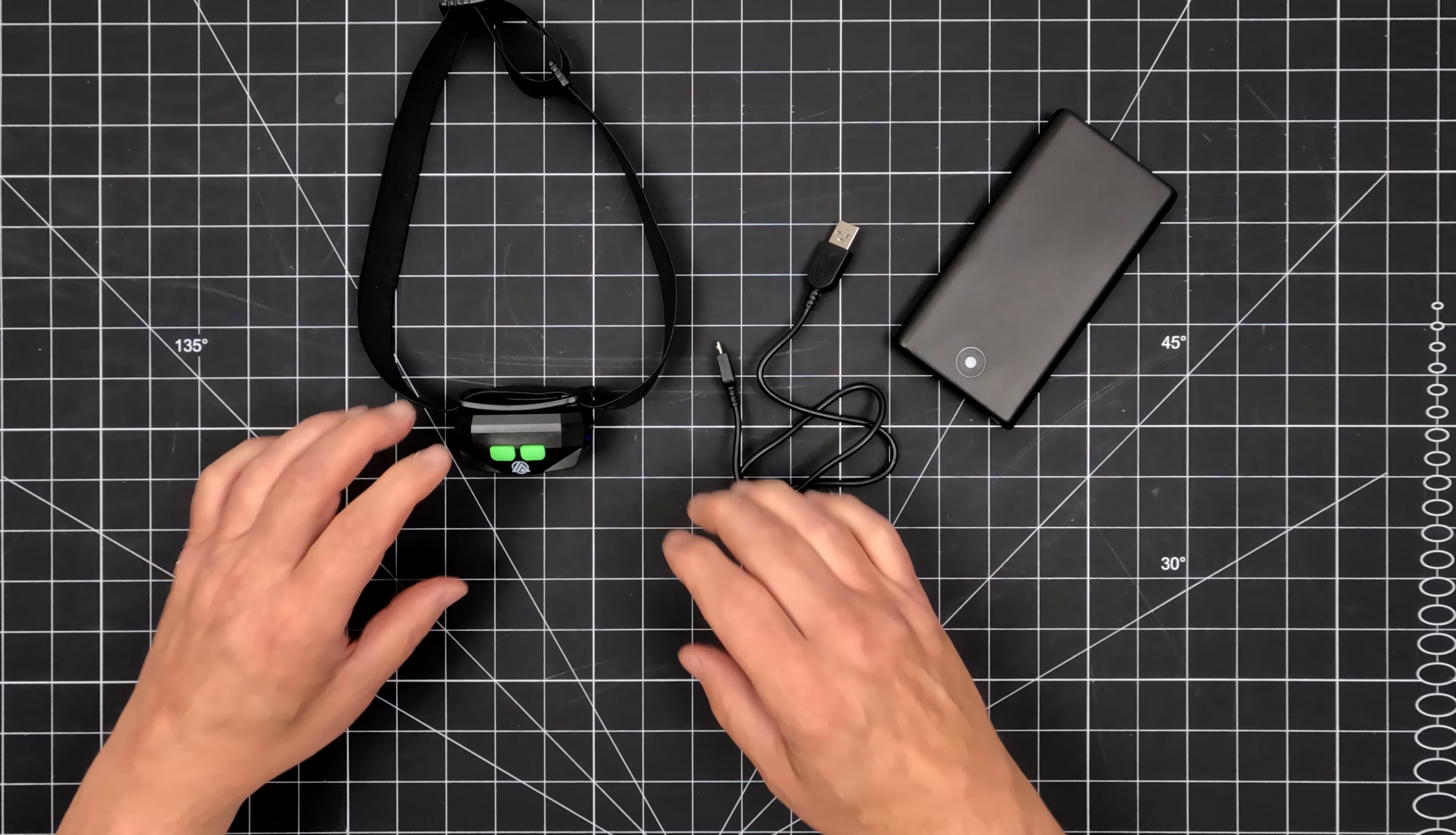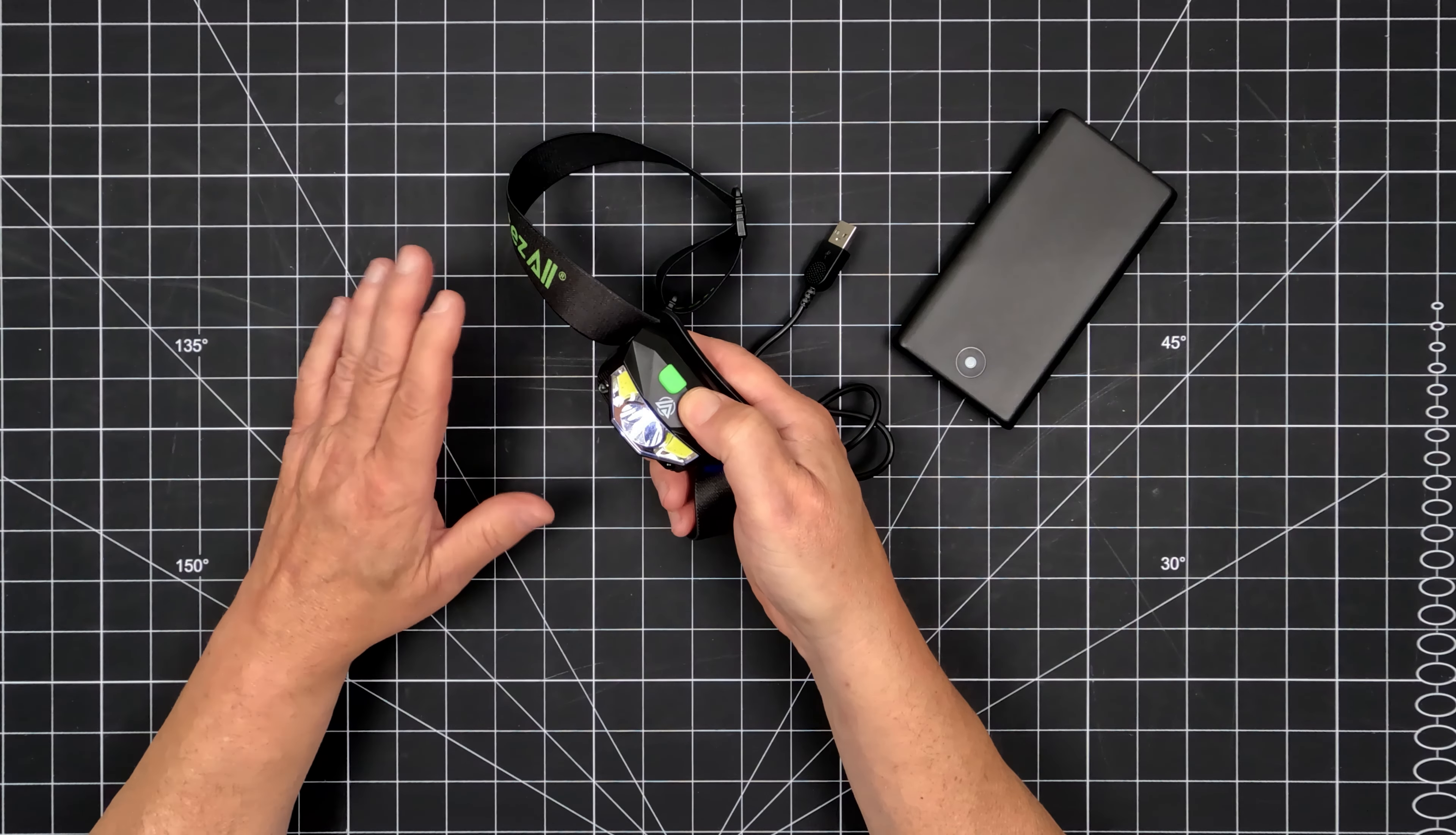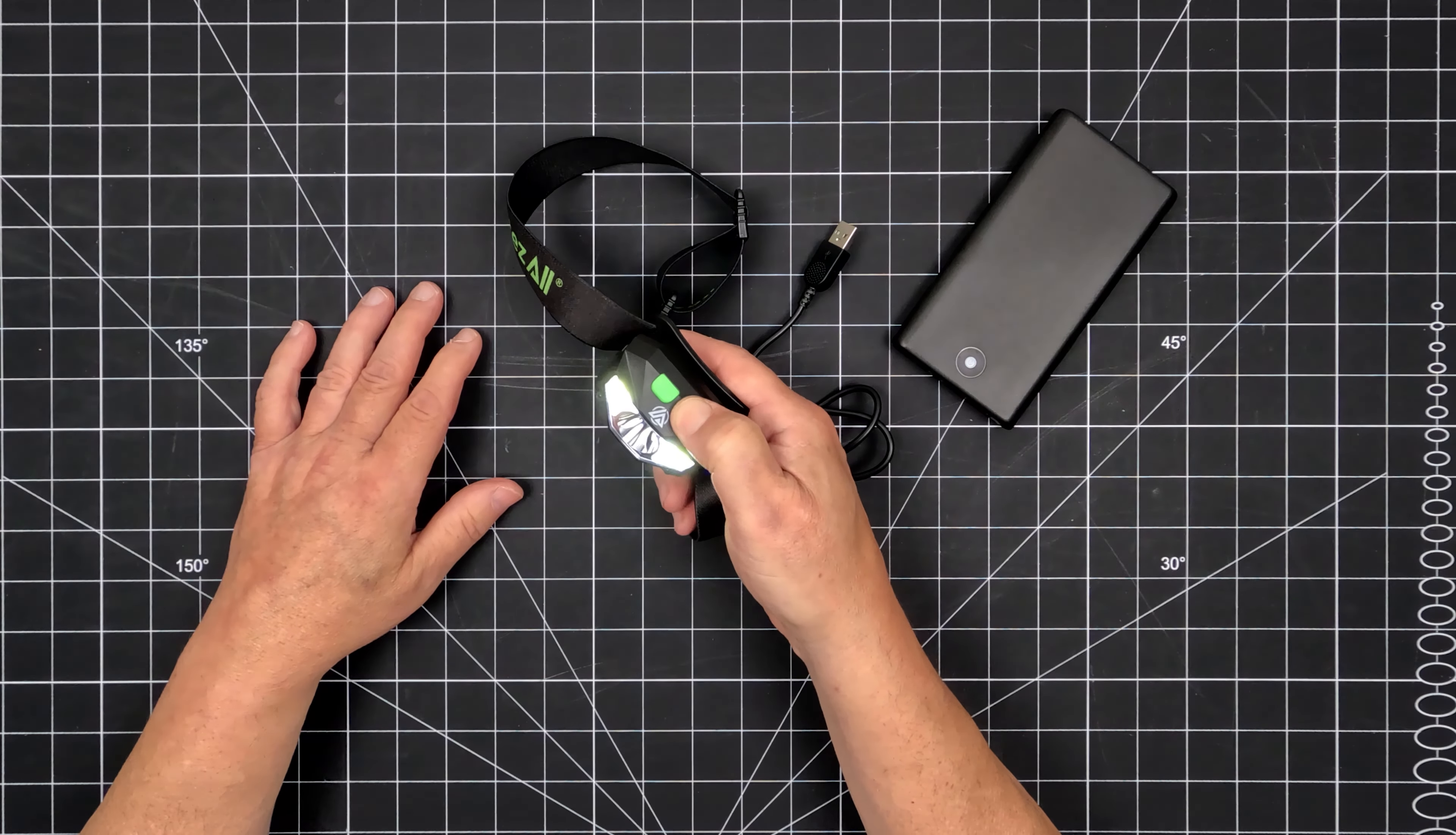The Lightsall Swipe is a rechargeable, motion-activated, multi-function headlamp suitable for any situation where hands-free light is the best option. Let's take a closer look.